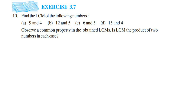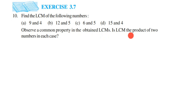This is question 10 from Exercise 3.7, from the chapter 'Playing with Numbers.' The question asks us to find the LCM of each of the following numbers. After finding the LCMs, we also need to observe a common property — specifically, whether the LCM equals the product of the two numbers in each case.